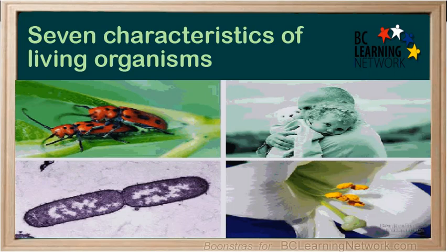Defining what is living and what is non-living is a very difficult task. Not all scientists agree on a common list of characteristics of life. There is also the consideration of things that were once living and are no longer living. We are going to discuss seven characteristics of living organisms.